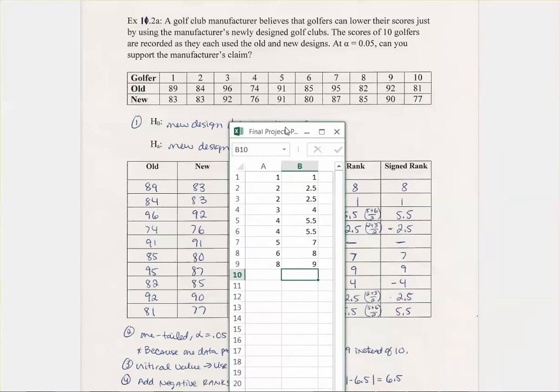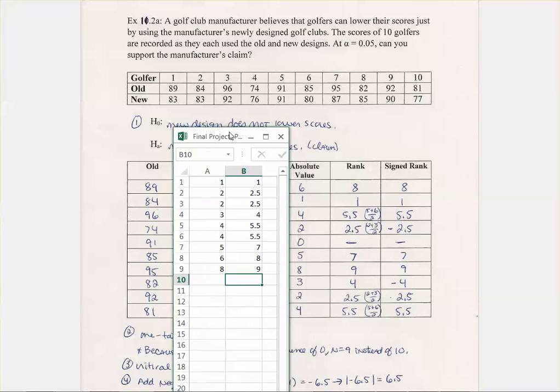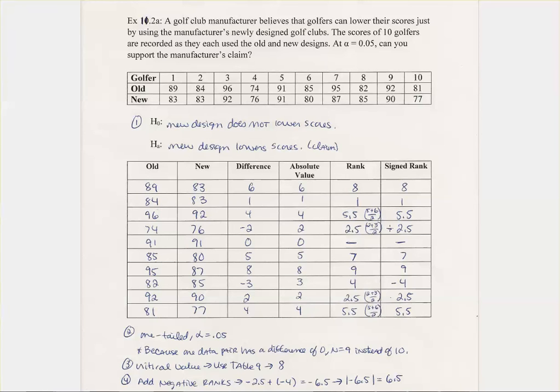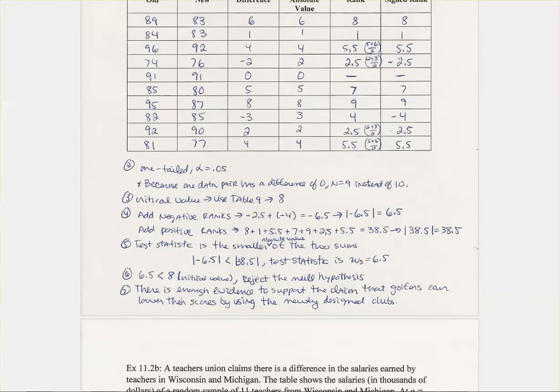I then took that value and then I placed it in here. So 6 is 8, 8 is 9. Then your signed rank, the only difference for your signed rank is that you come back and you look at which ones had negatives. So in this case, the 74, 76, this was negative. So you add your negative back in there. And your 82 and 85, this one was negative. So you add your negative back in there.